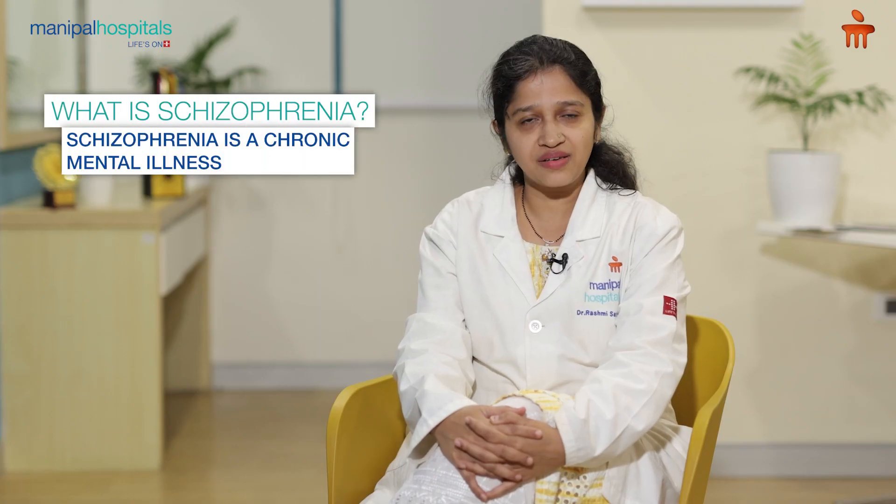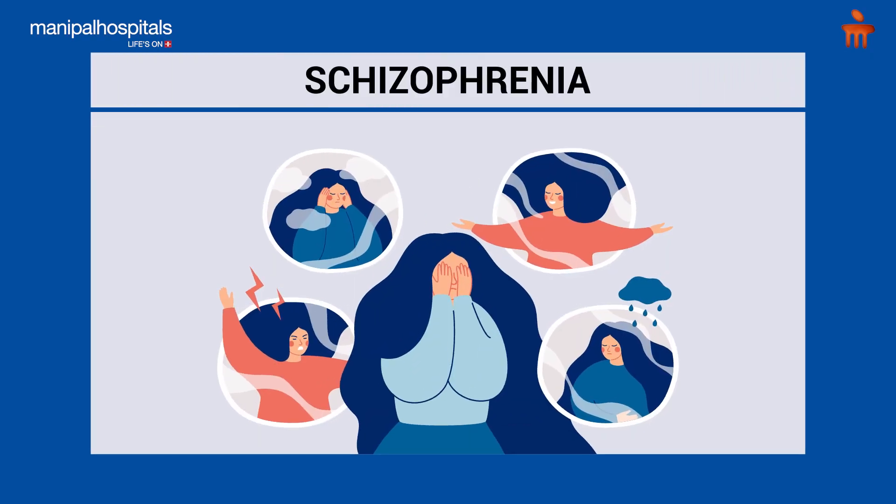Schizophrenia is a chronic, serious mental illness which affects a person's ability to think, act, and perceive reality.